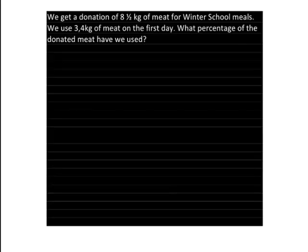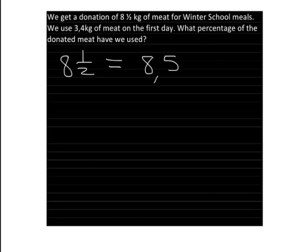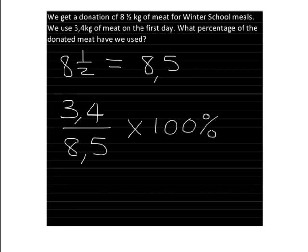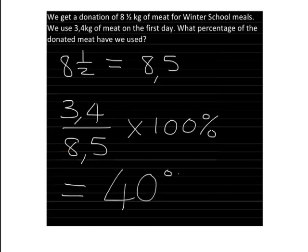Here's one for you to try. We get a donation of 8.5 kilograms of meat for winter school meals, and we use 3.4 kilograms on the first day. What percentage of the donated meat have we used? Pause the video now and try this in your homework book — you can use a calculator. The way we do this: 3.4 out of 8.5, times 100. Enter 3.4 divided by 8.5 multiplied by 100 into your calculator, and you get 40%.